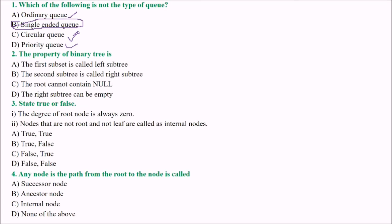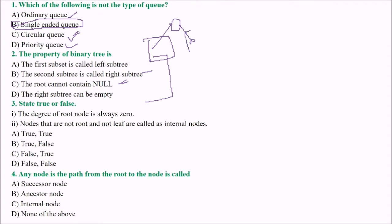The next question is: what is the property of a binary tree? There are four options. The first subset is called the left subtree — is this a property? The second subtree is called the right subtree. The root cannot contain null — is this a property? Any tree, including a binary tree, can contain null at the root. There is no such limitation. For any node, all the left children are called the left subtree and the others form the right subtree.